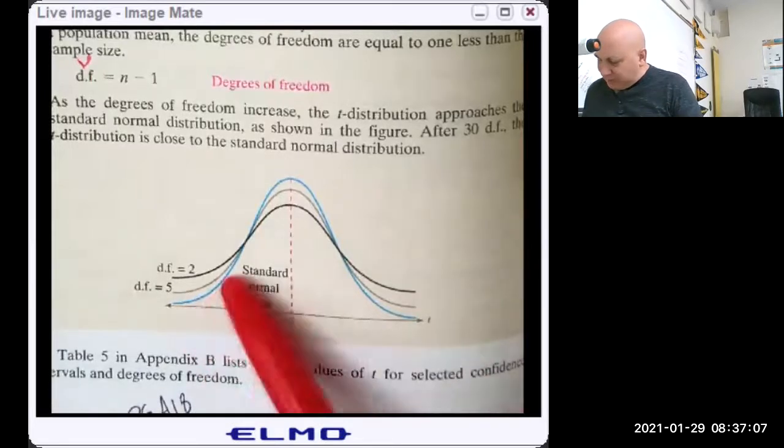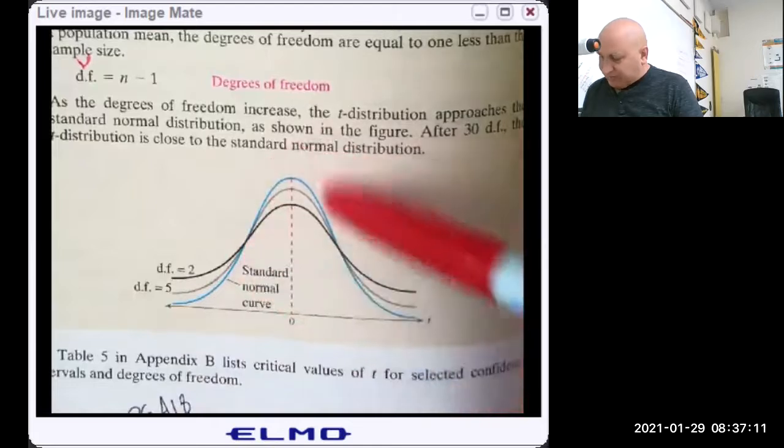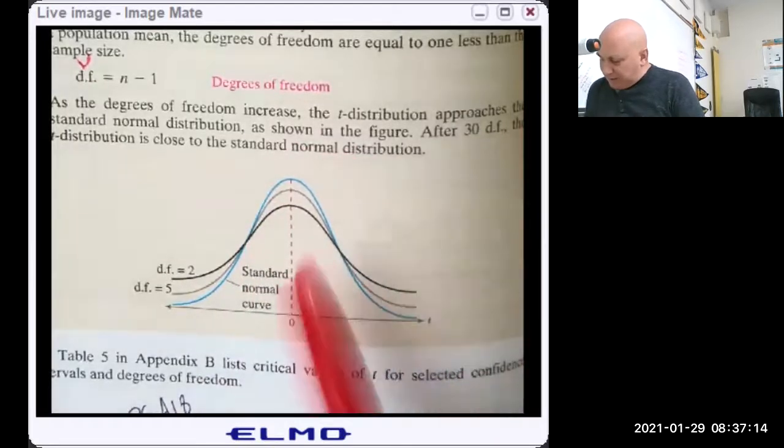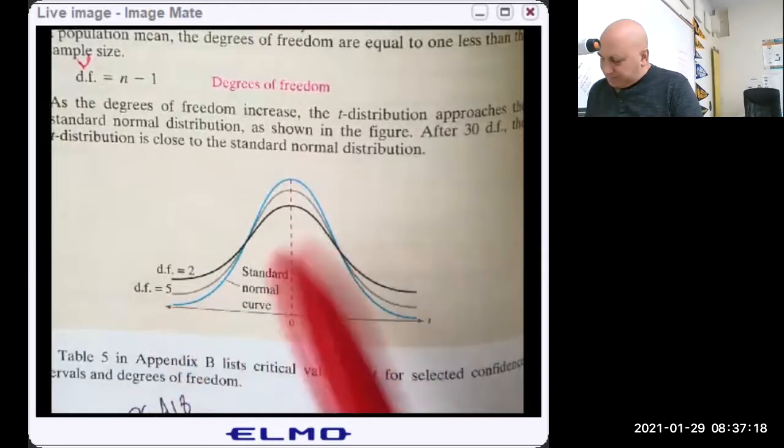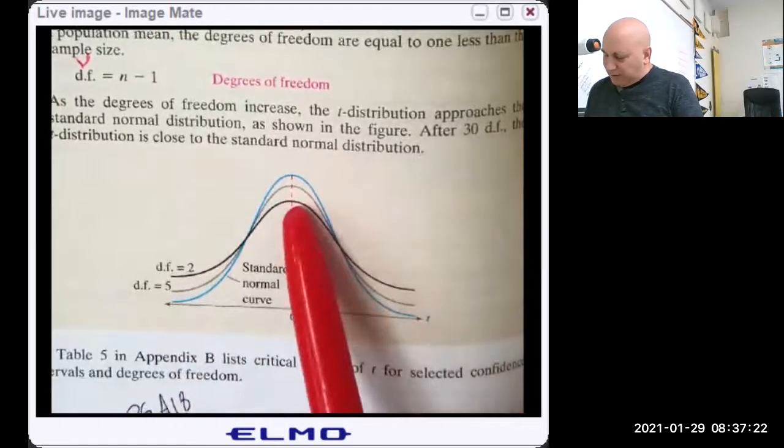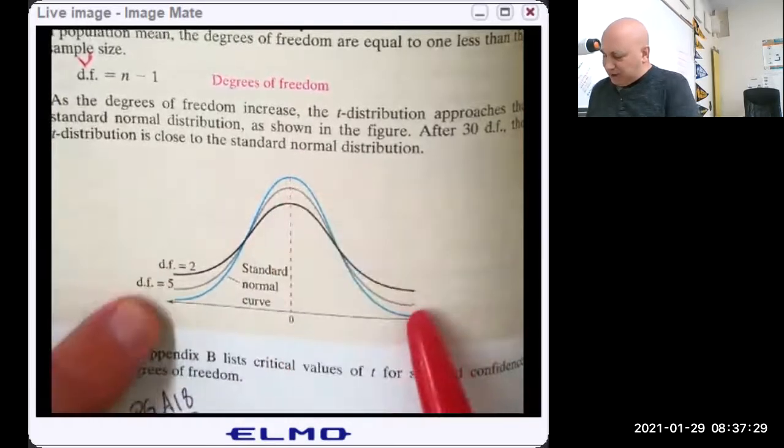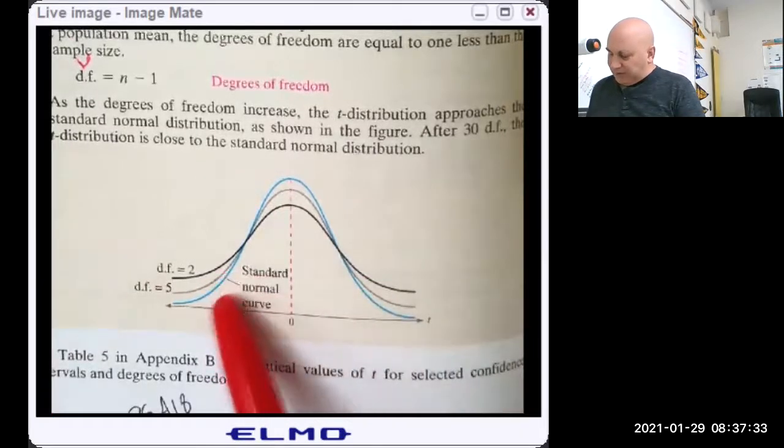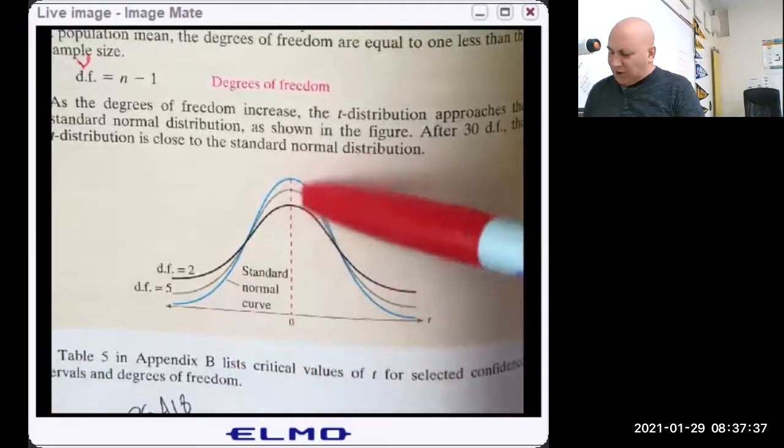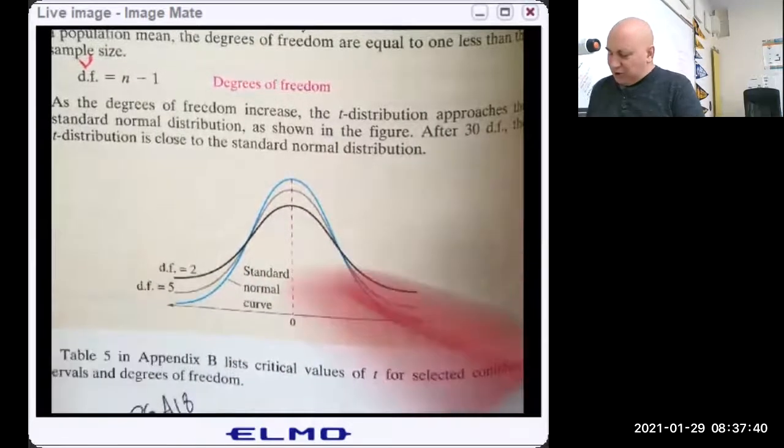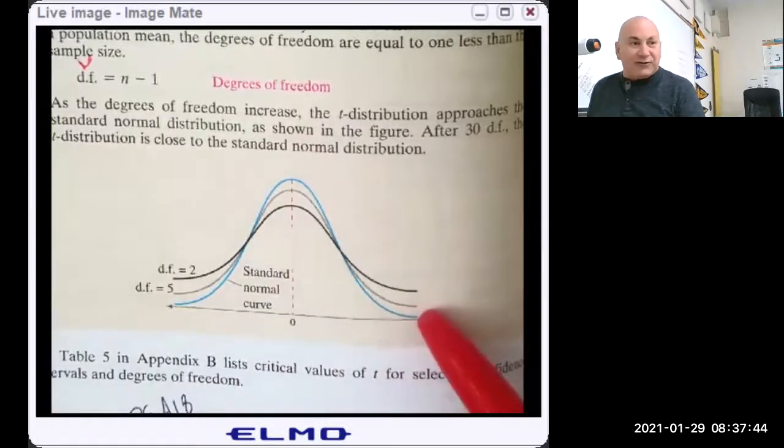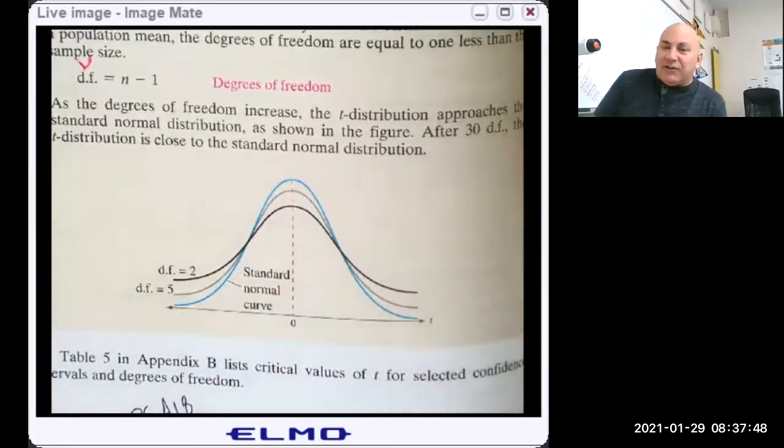So here's your normal curve with this white blue one. You'll notice it's the thinnest of the bunch. It's tallest, which means it's also the thinnest. If you have two degrees of freedom, you notice the two is the shortest one and it's got the fattest tails. Five is a little bit taller. The tails are not quite as fat. The normal curve is the tallest of the bunch and its tails are the thinnest of the bunch. So the bottom line is there are an infinite number of T curves. The more and more data points you have, the bigger your sample size, the closer and closer your T curve is to a Z curve.